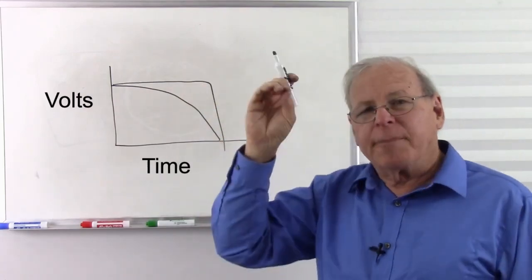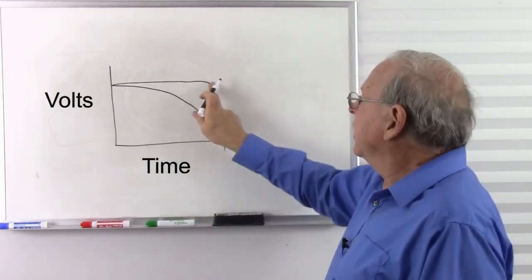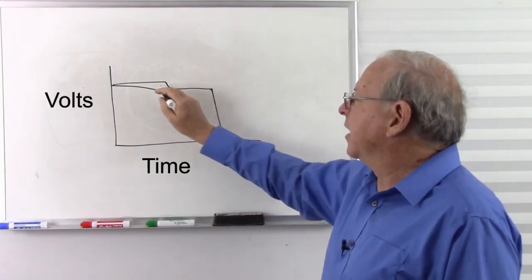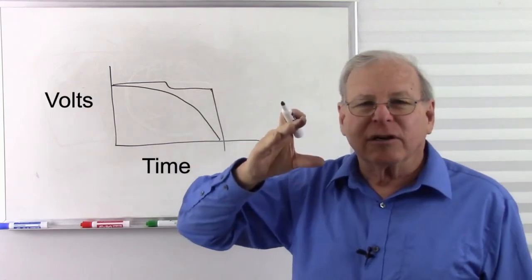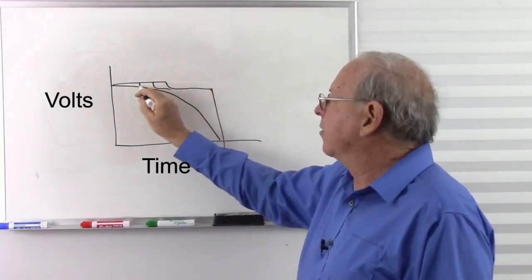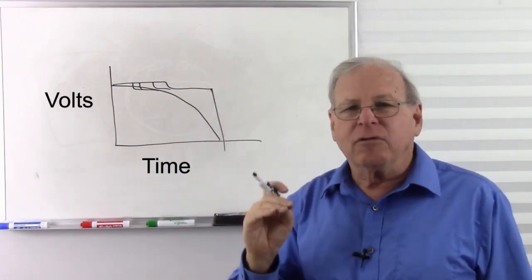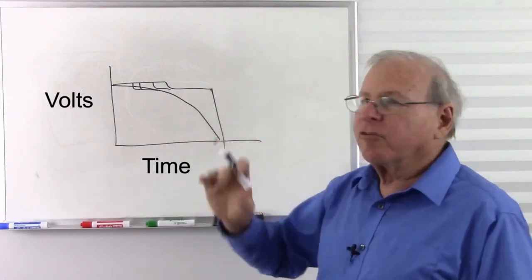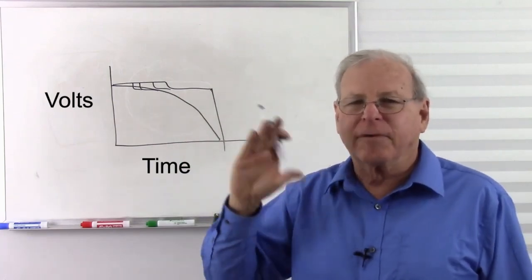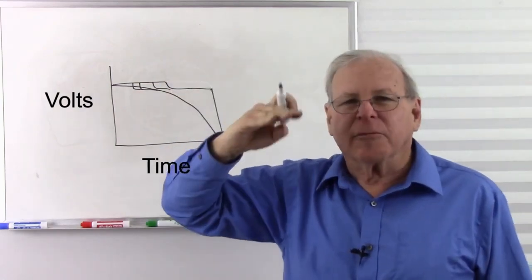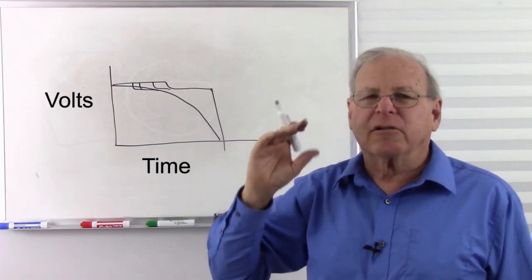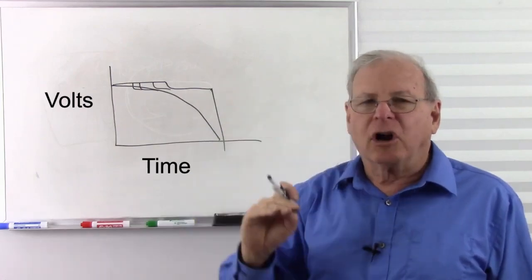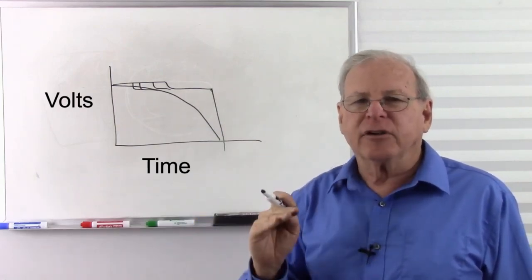They found that as you top it off and use it a little bit, then top it off and use it a little bit, it starts following a worse curve. And as time goes by and you keep topping it off and using it a little bit, that happens earlier and earlier. This is called the memory effect. There are two bad scenarios with nickel cadmium batteries: topping it off and using it a little bit repeatedly, or charging a little bit and then discharging a little bit repeatedly.